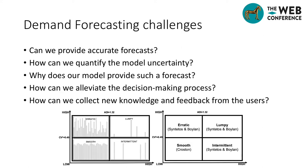Demand forecasting poses multiple challenges. First, demand forecasts are useless if we are unable to provide accurate estimates. In order to do so, we must consider the demand patterns. One of the most popular demand classification schemas was proposed by Sintados et al., who divided demand into four quadrants based on demand occurrence frequency and demand size variability. Among the factors that influence demand occurrence and size variability, we can name the market characteristics, the numerousness and heterogeneity of the customers, or the granularity level at which the demand is considered.